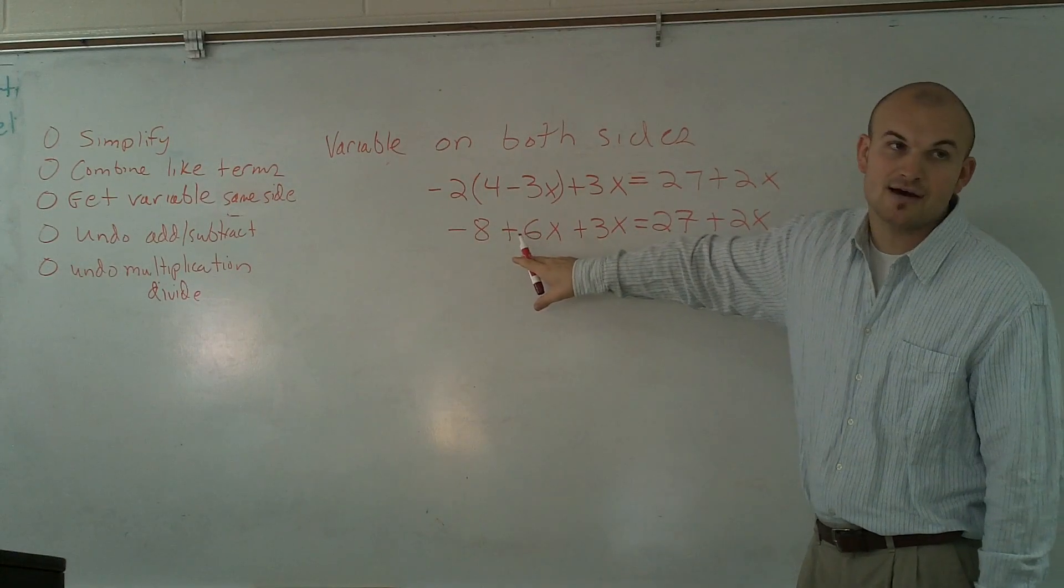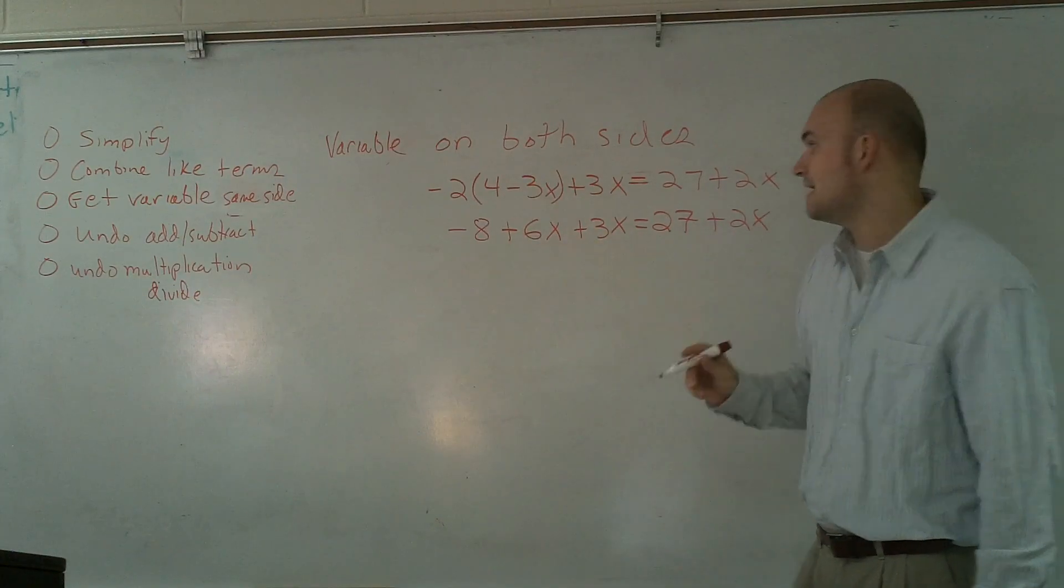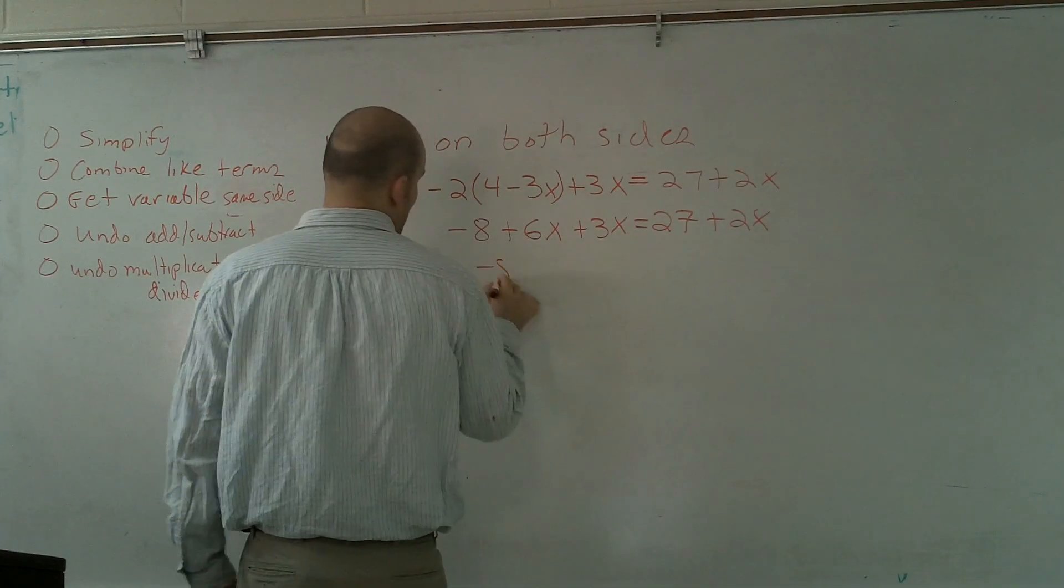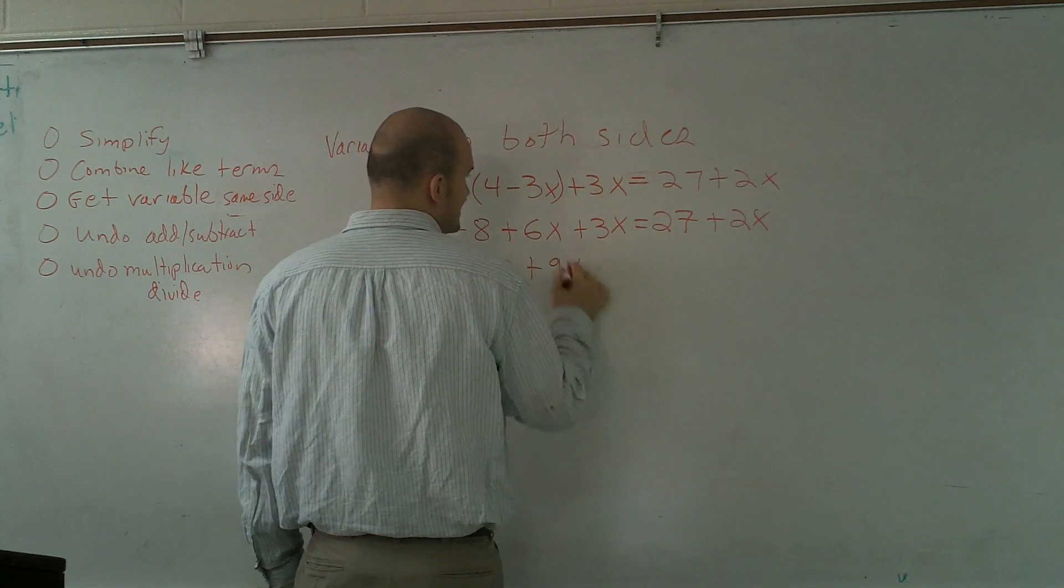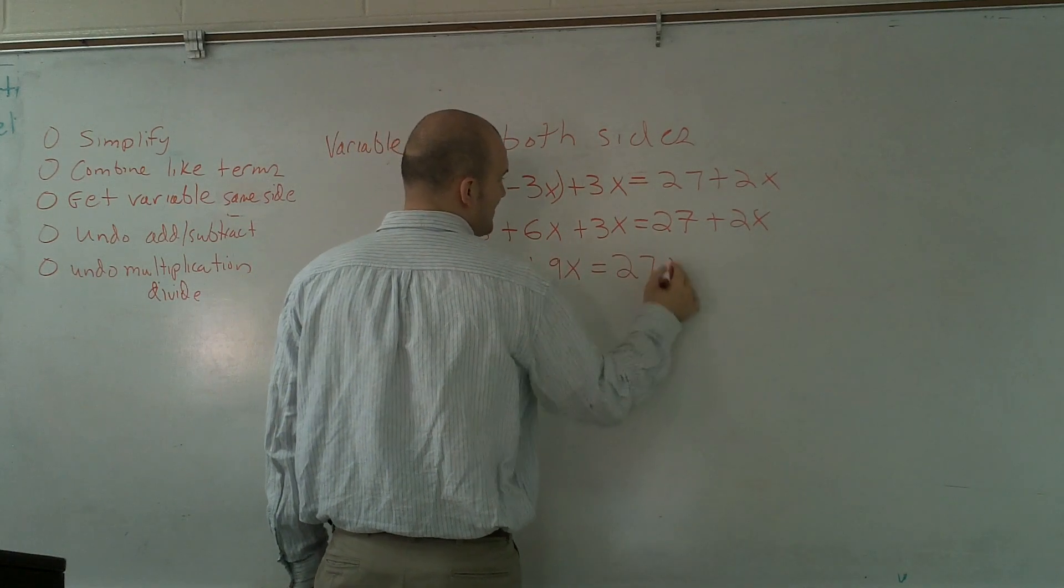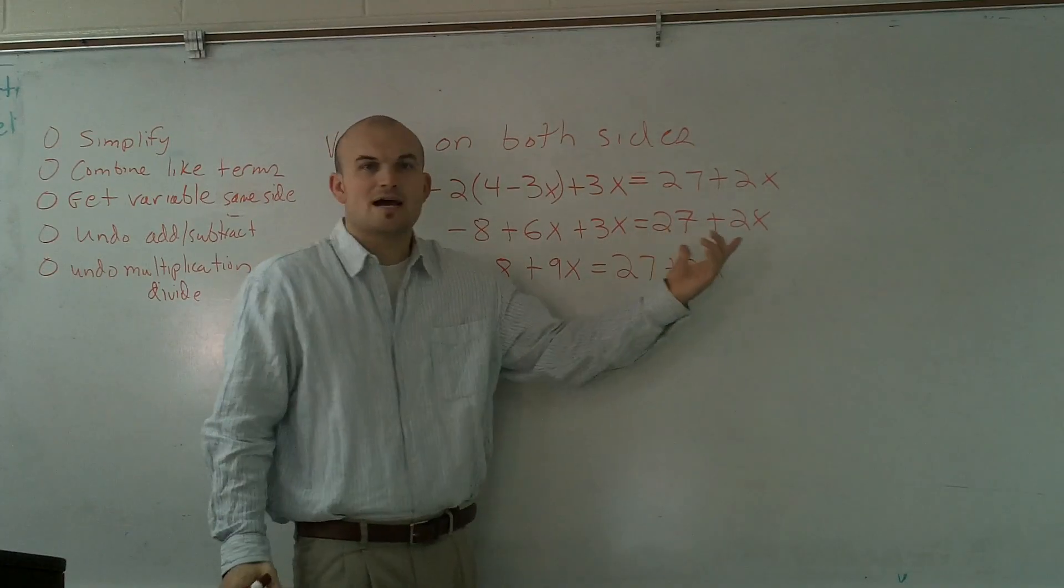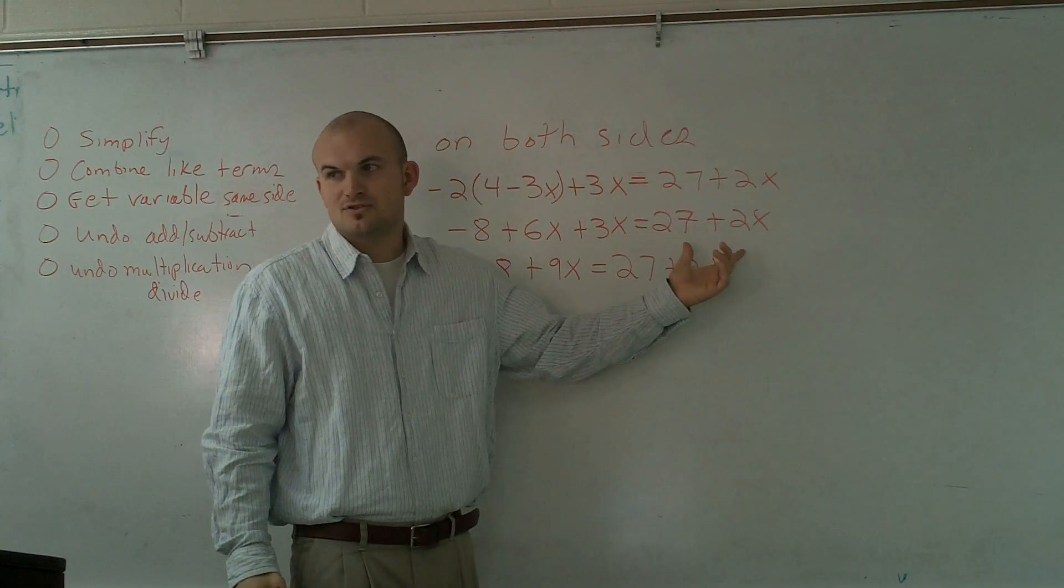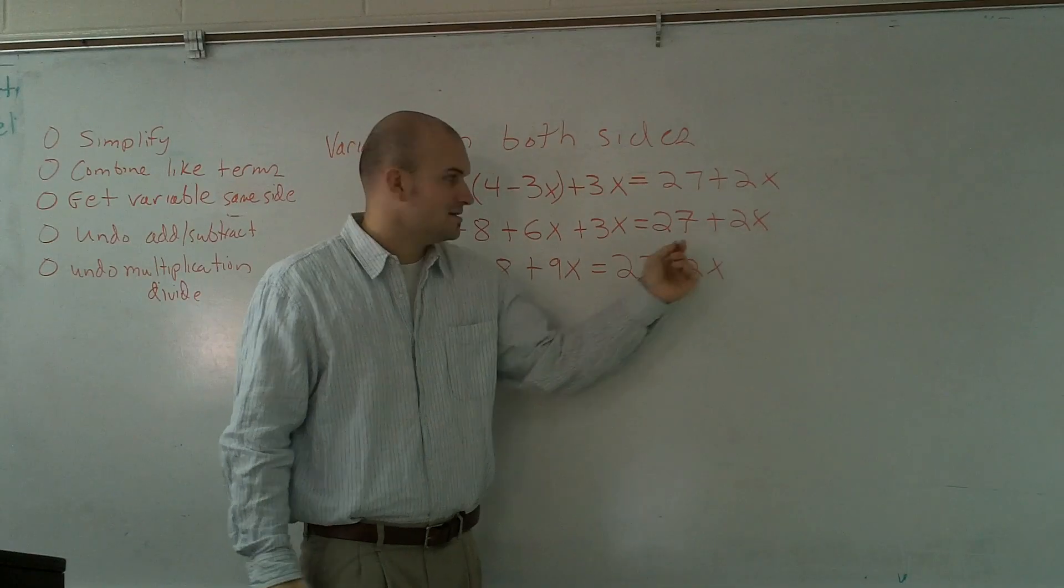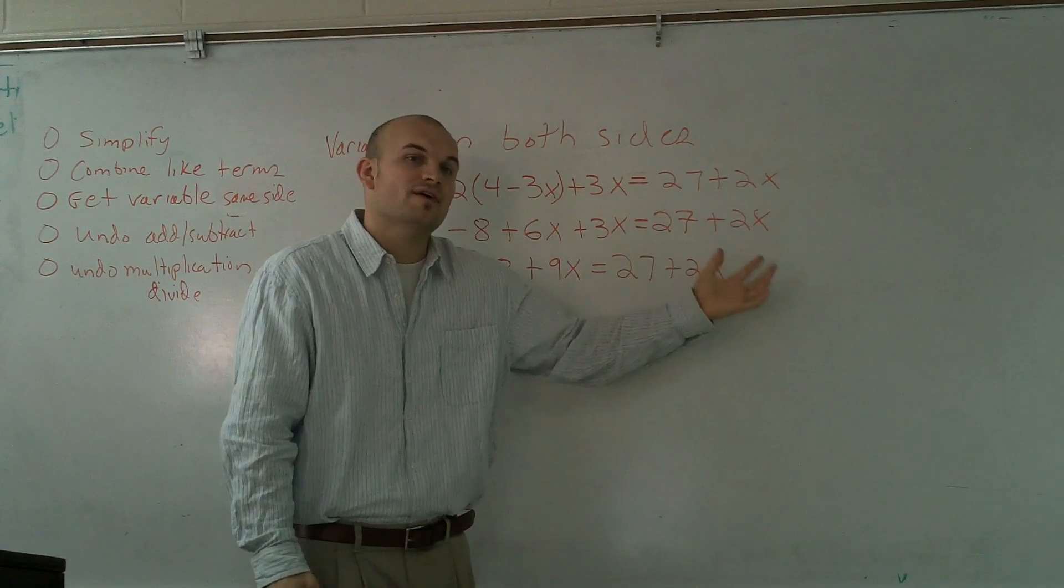However, I do have my coefficients of my x terms. I can combine those. So, I have negative 8 plus 9x equals 27 plus 2x. I can't combine everything here. 27, 2x, they cannot be combined. Do not write 29 or 29x. You cannot combine your x's because you don't know the value of x.